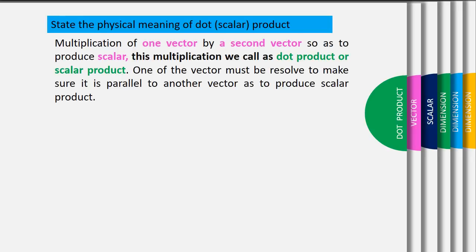Multiplication of one vector by a second vector so as to produce a scalar. This multiplication we call as dot product or scalar product.